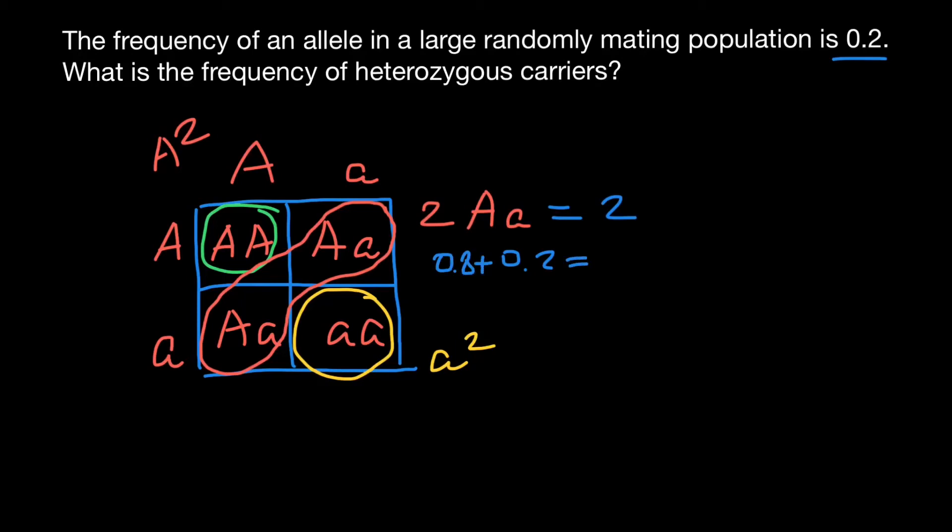So together these two alleles would equal 1, and 1 here is equal to 100%. We also can say that the frequency of the dominant allele is 80% plus 20%, and we are going to get 100%.